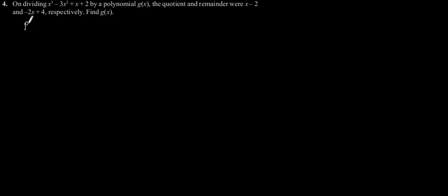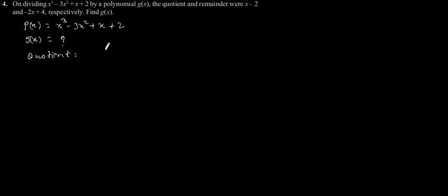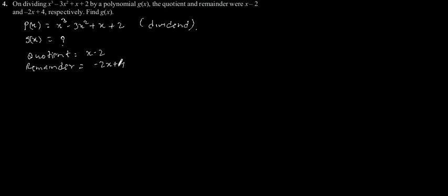As given in the question, let the dividend p(x) be x³ minus 3x² plus x plus 2. We need to find g of x. The quotient is given as x minus 2, and the remainder is minus 2x plus 4.